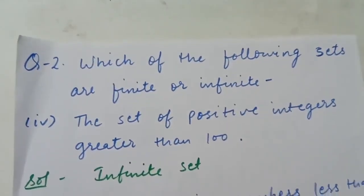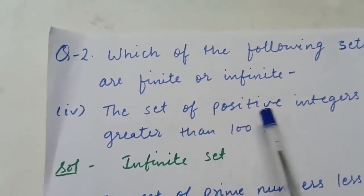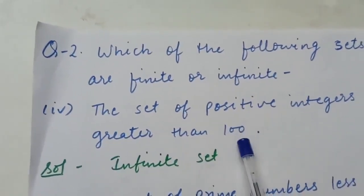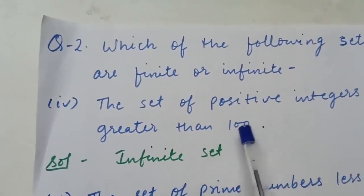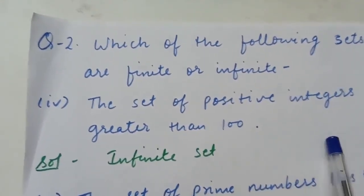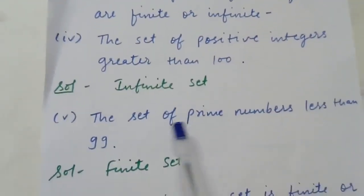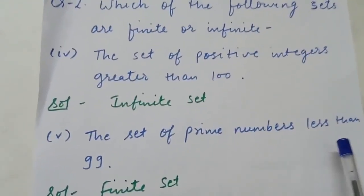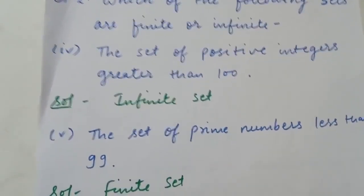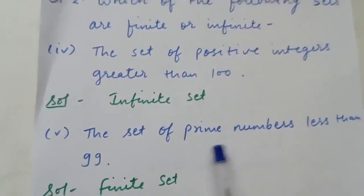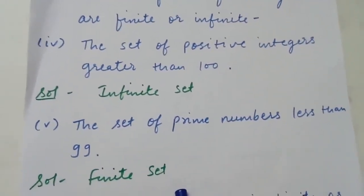Question 2: which of the following sets are finite or infinite? The set of positive integers greater than 100 — there can be infinitely many such integers, so this is an infinite set. The set of prime numbers less than 99 — there are finitely many prime numbers less than 99, so this is a finite set.